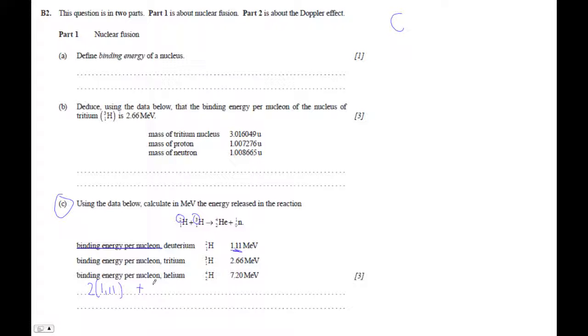So the total binding energy of the left side is that. And then if we look at helium, the binding energy of that is 7.20. And there's four of those. So compare that to 4 times 7.20.